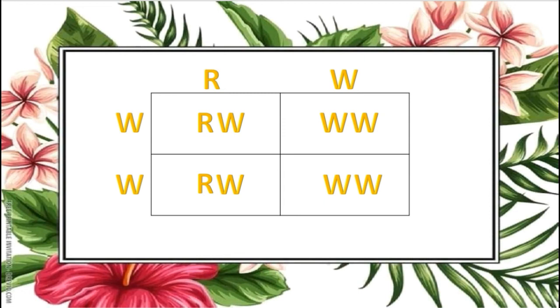W is crossed with W, we get WW. And W is crossed with W and finally we get WW. Based on the result of the Punnett square, we can say that the genotypic ratio is 2 is to 2, that is 50% RW and 50% WW.